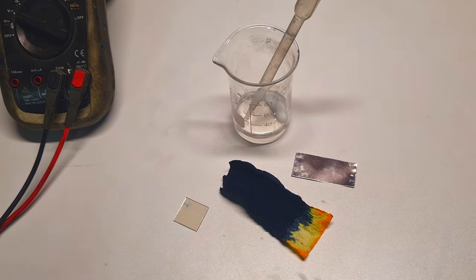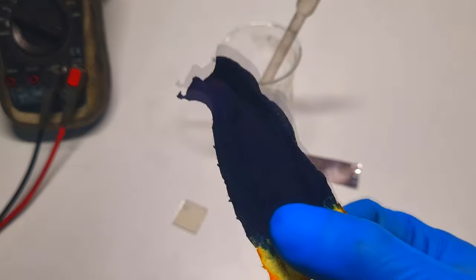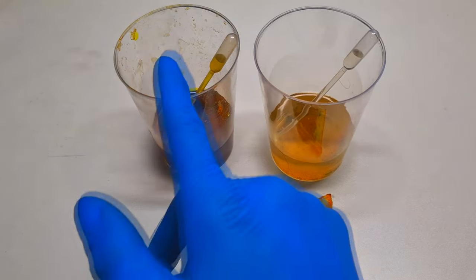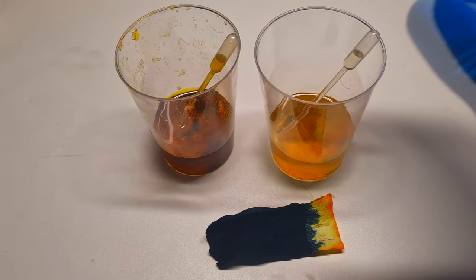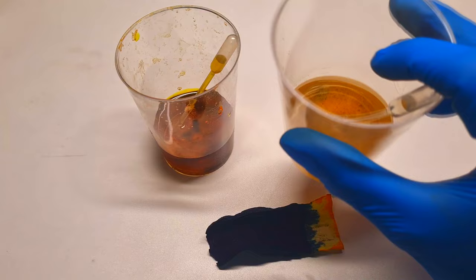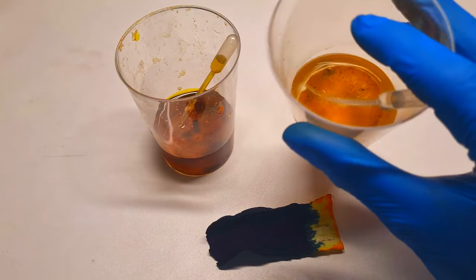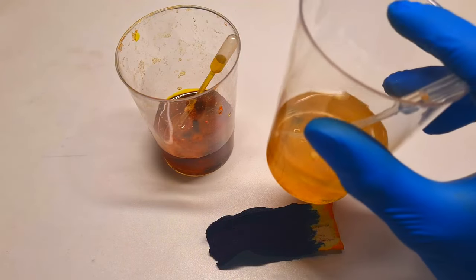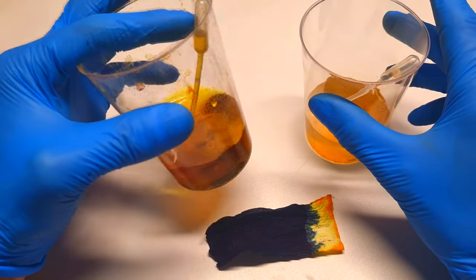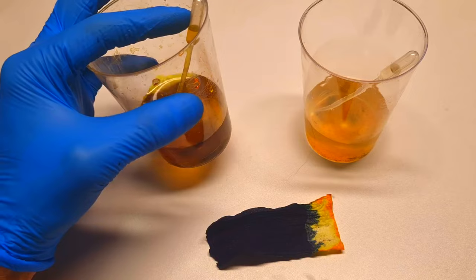But before I assemble this cell, I will show you how to make this Prussian blue. The Prussian blue is really simple to make because you only need these two ingredients. Here I have some solution of iron sulfate, but instead you can also use iron chloride. And here I have some solution of potassium hexacyanoferrate.